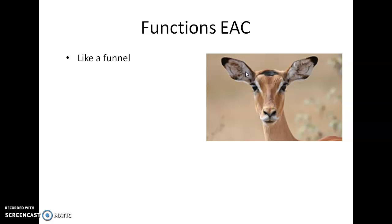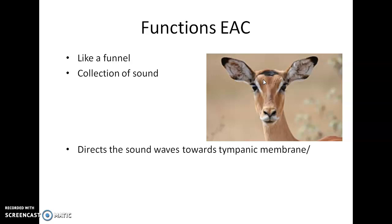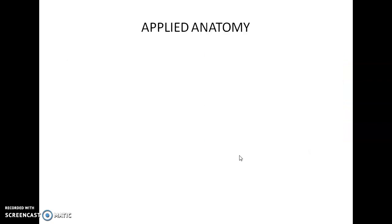Coming to the functions of the external auditory canal: it acts like a funnel — broader on the outer aspect and narrower on the inner aspect — which helps in the collection of sound. It also directs and transmits sound waves towards the tympanic membrane, acting as a transmitter towards the eardrum.